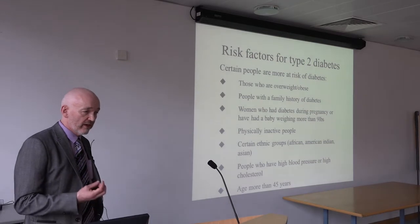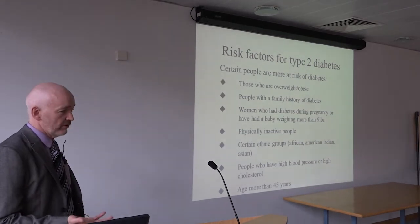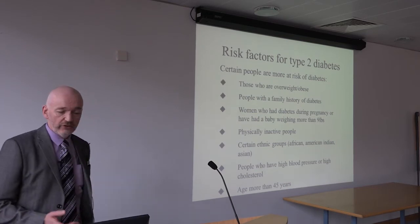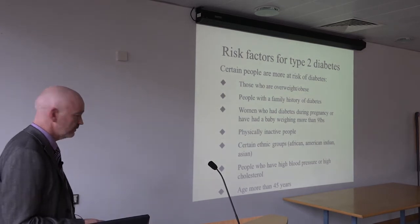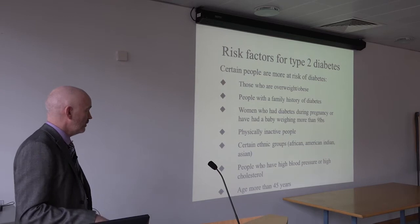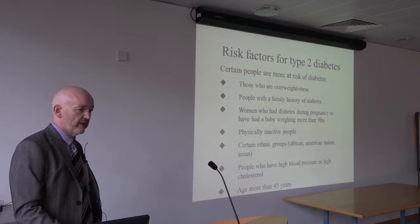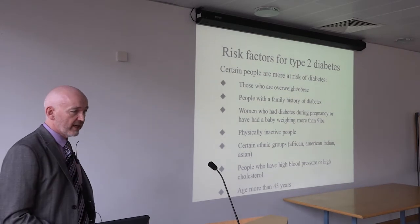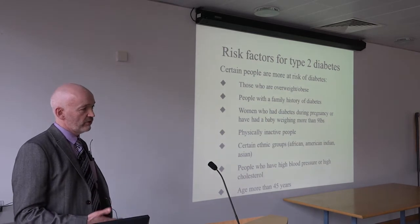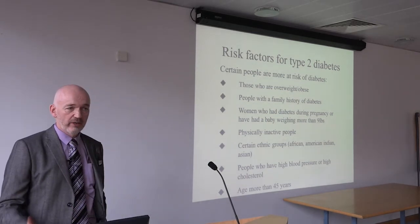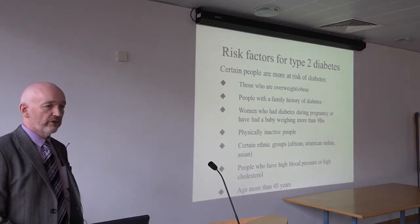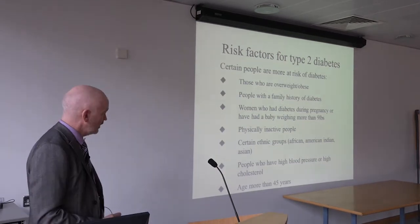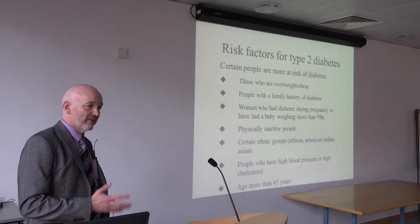People at particularly high risk of type 2 diabetes include those who are overweight or obese, people with a family history, women who had gestational diabetes, physically inactive people, certain ethnic groups — African, American Indian, and Asian people are more prone than Caucasians — people with high blood pressure or high cholesterol, and anyone over 45, since prevalence increases with age, probably because we tend to gain weight and become less active as we get older.